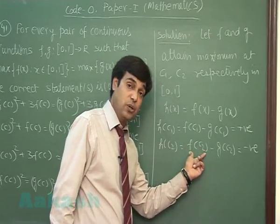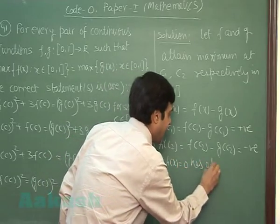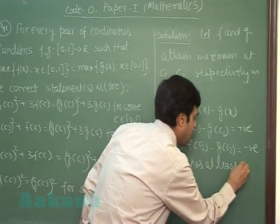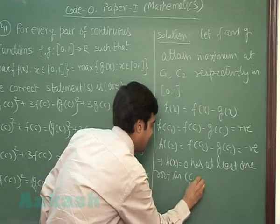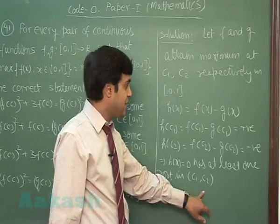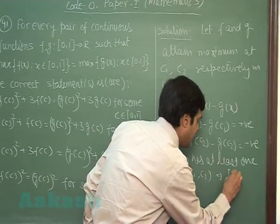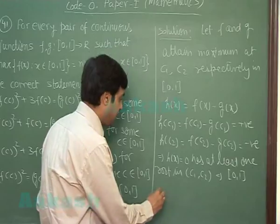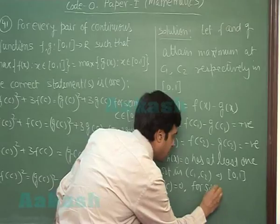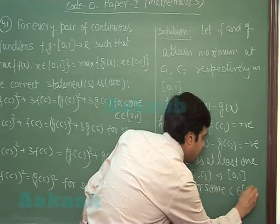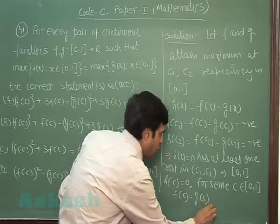So we find that h(x) = 0 has at least one root in [c₁, c₂]. Since c₁ and c₂ are in the interval [0,1], we can conclude in the interval [0,1]. So we observe that h(c) = 0 for some c ∈ [0,1], that is f(c) = g(c) for some c ∈ [0,1].